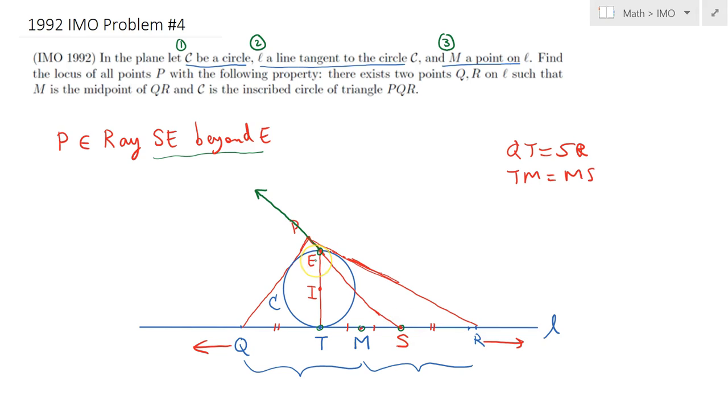When I say unique, I mean independent of the choice of Q and R. You vary Q and R, you bring them farther to each other or closer to each other, as long as M is the midpoint, S does not depend on Q and R. S only depends on the circle and the line. And as a result we can say that if such a circle exists such that it is the incircle of triangle PQR, the location of P would be on this ray which depends, as we said earlier, only on the three objects C, L, and M.